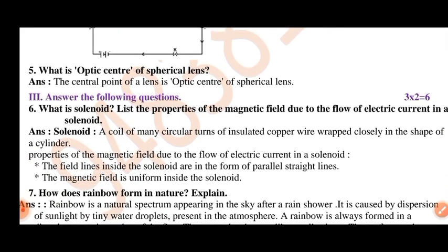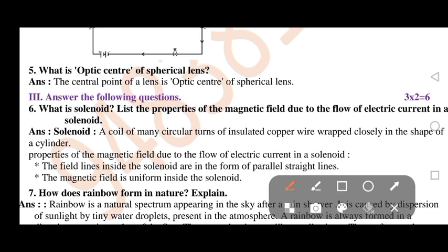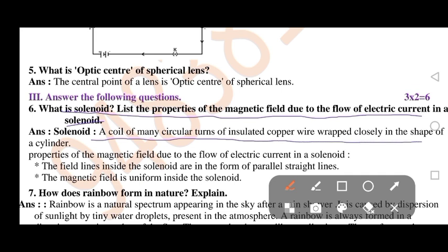Next, answer the following questions. What is a solenoid? List the properties of the magnetic field due to the flow of electric current in a solenoid. A solenoid is a coil of many circular turns of insulated copper wire wrapped closely in the shape of a cylinder. The field lines inside the solenoid are in the form of parallel straight lines. The magnetic field is uniform inside the solenoid.